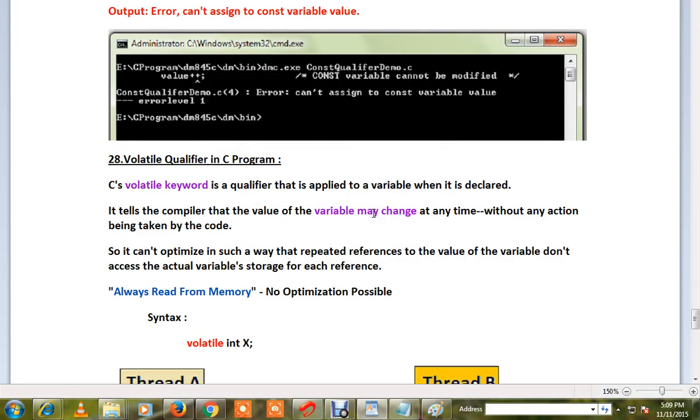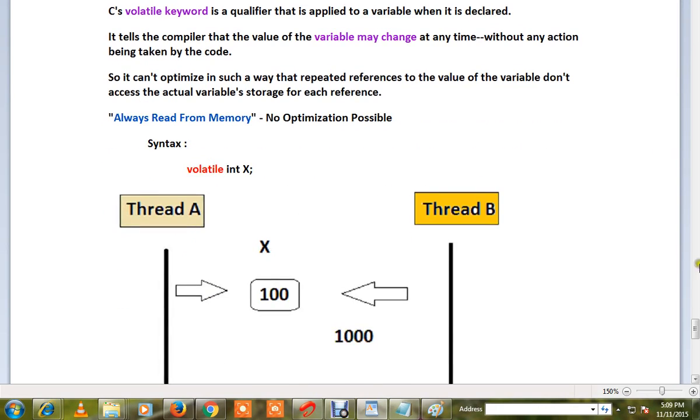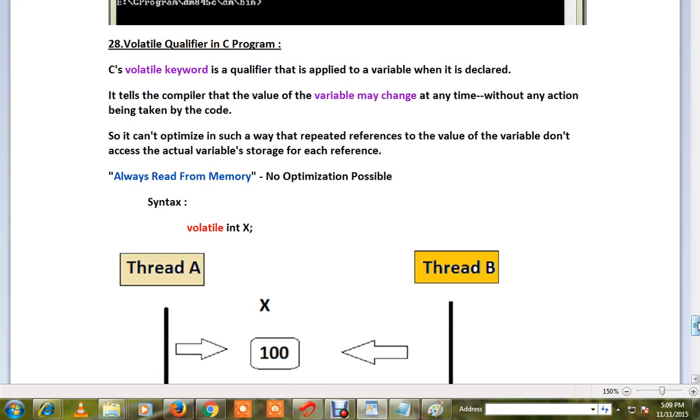Hi friends, welcome to C program tutorial. In this video I'm going to talk about the volatile qualifier in C programming. What is the volatile keyword and how to use it in C? First of all, why do we need it?